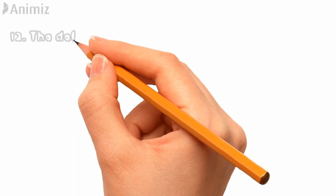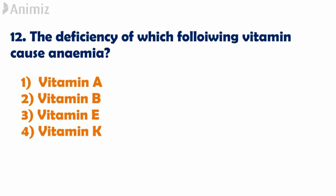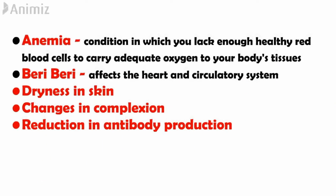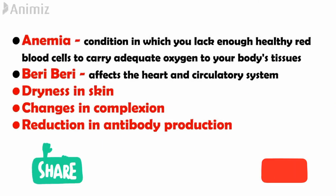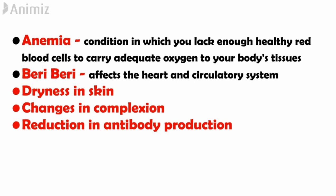Now the second question: the deficiency of which of the following vitamins causes anemia? Anemia is a condition where you lack enough healthy red blood cells to carry oxygen, and this is caused by a deficiency of vitamin B. Therefore the answer is vitamin B. Other deficiency symptoms of vitamin B include beriberi, which affects the heart and circulatory system, dryness of skin, changes in complexion, and reduction in antibody production.